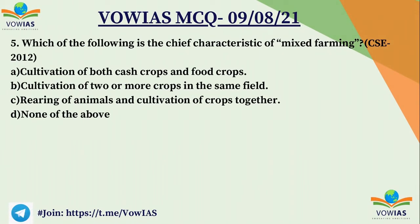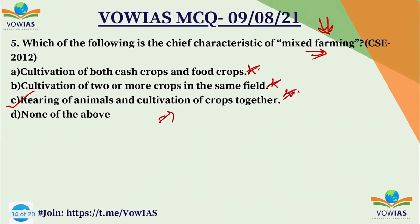The fifth question: which of the following is the chief characteristic of mixed farming? A. Cultivation of both cash crops and food crops. B. Cultivation of two or more crops in the same field. C. Rearing of animals and cultivation of crops together. D. None of the above. Mixed farming means rearing of animals and cultivation of crops together, so C is the correct answer. This is a previous year CSE question from 2012.